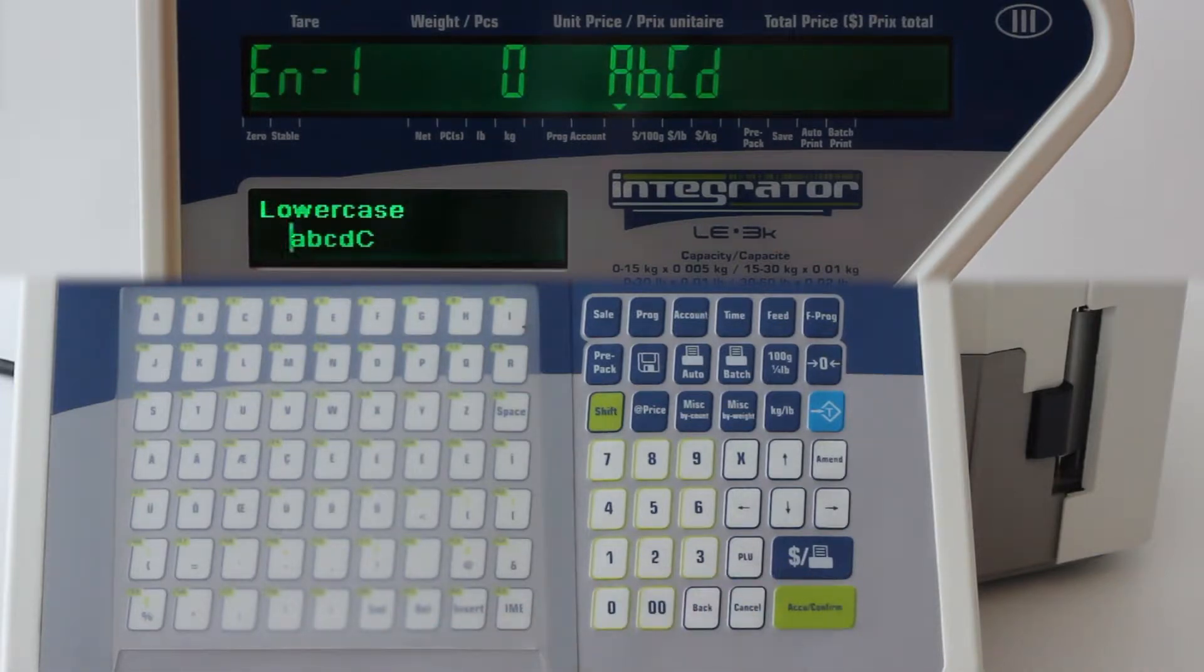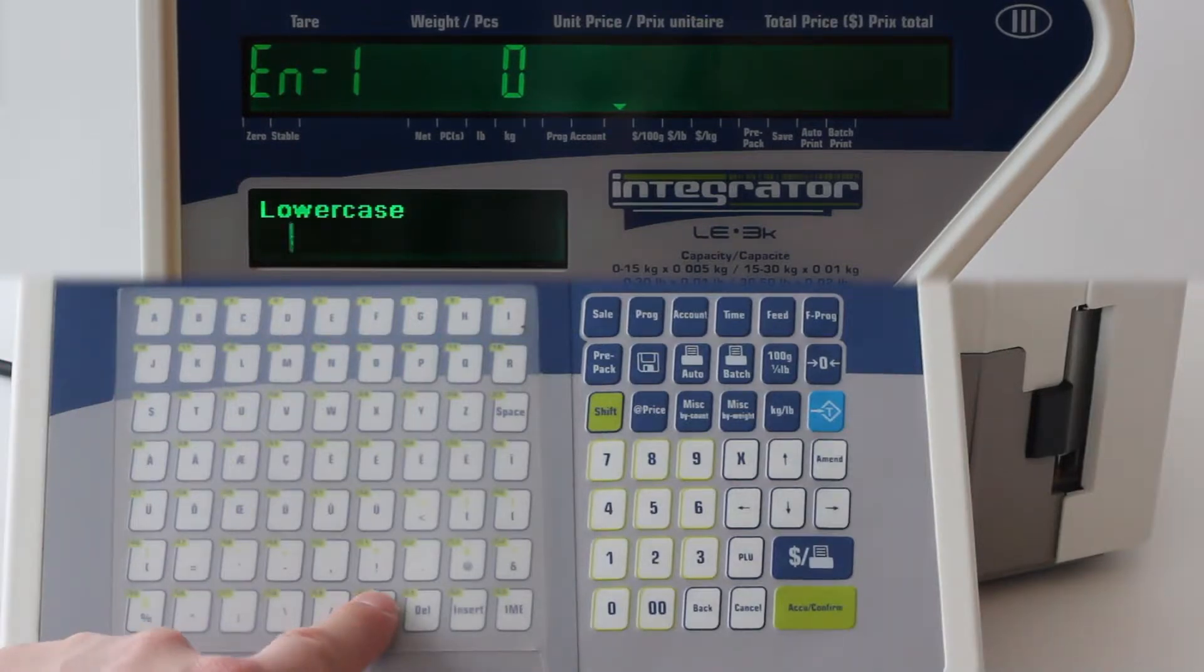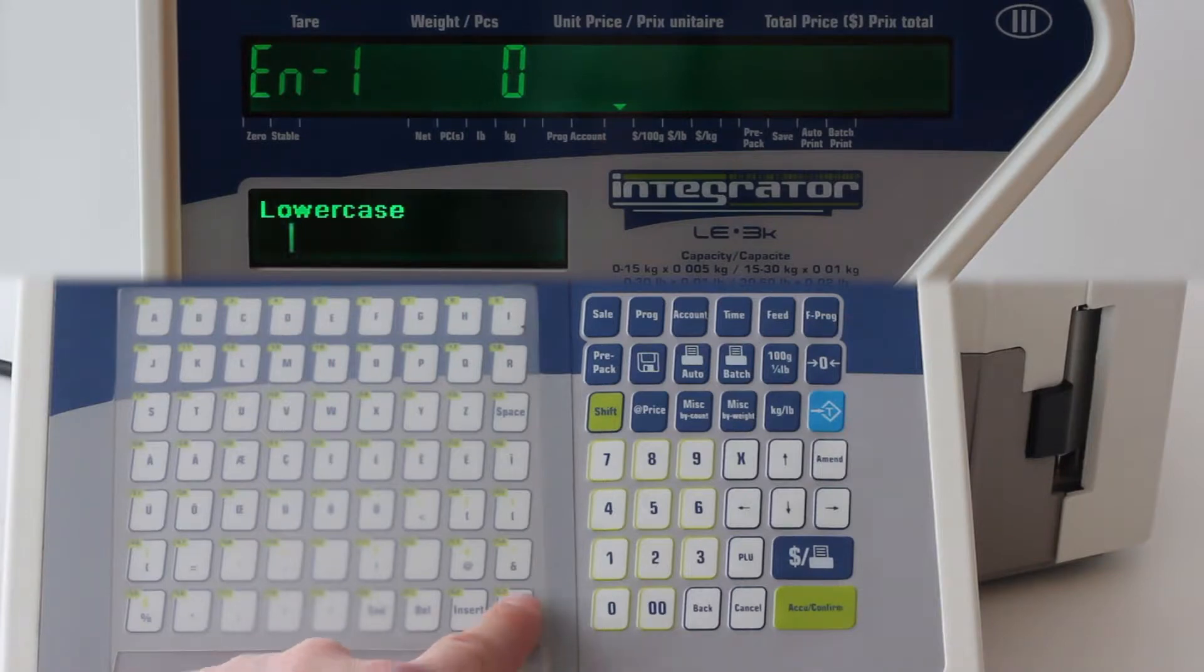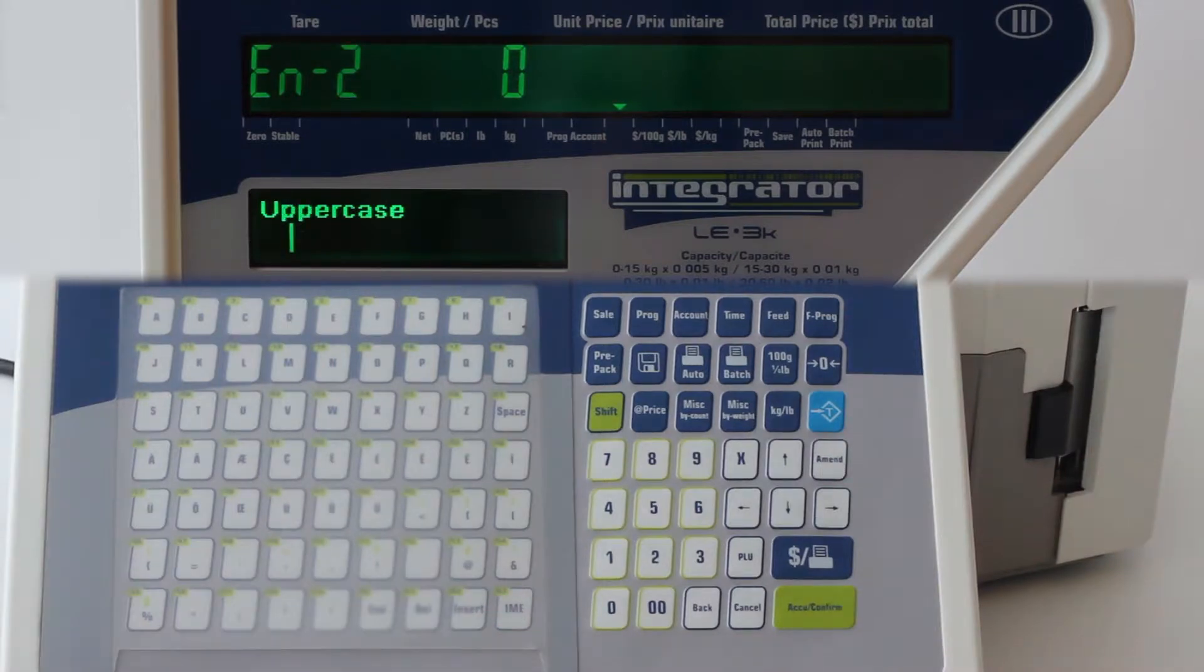You can start entering the name using the alphanumeric keyboard on the scale. Use the N key to erase text that appears after the cursor. You can press the I, M, E key to toggle between uppercase and lowercase.